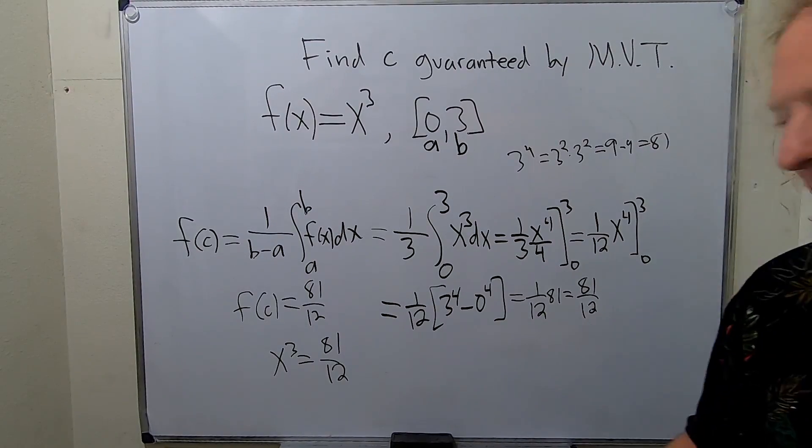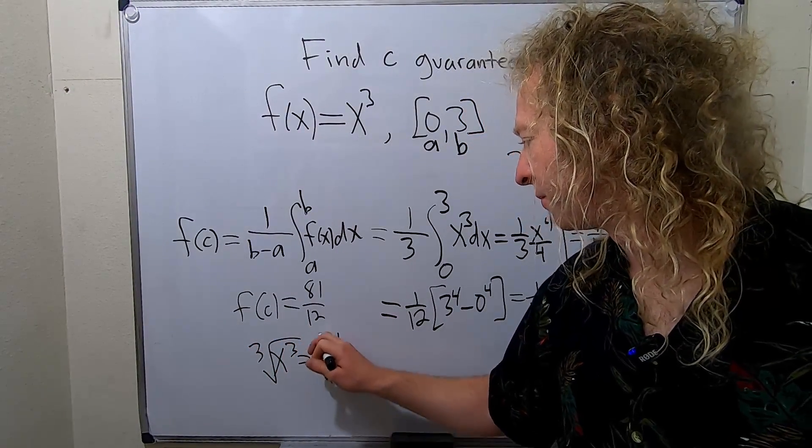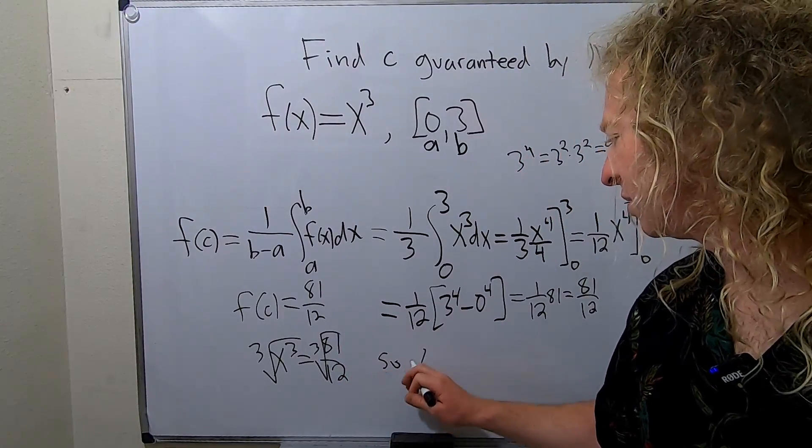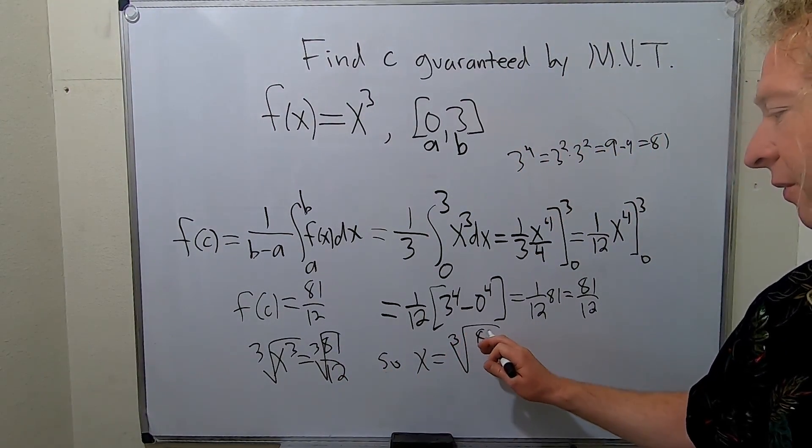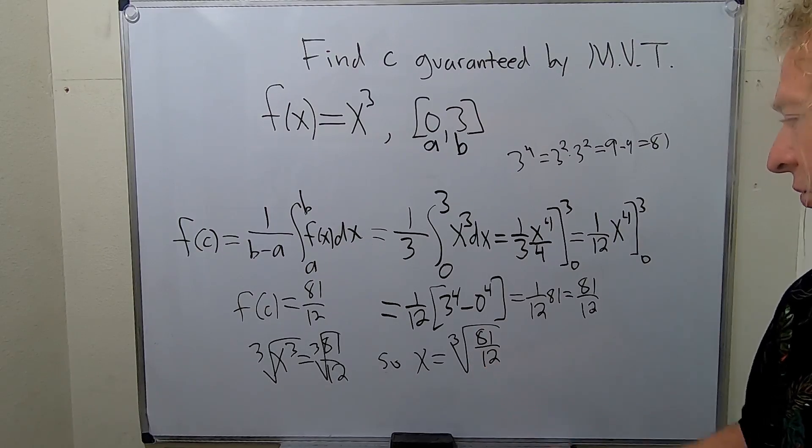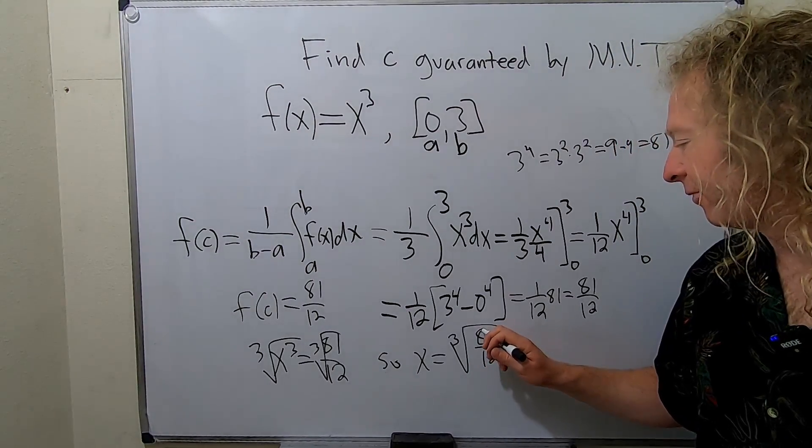And then to solve for x, you take the cube root of both sides. So cube root, cube root. So we end up with x equals the cube root of 81 over 12.